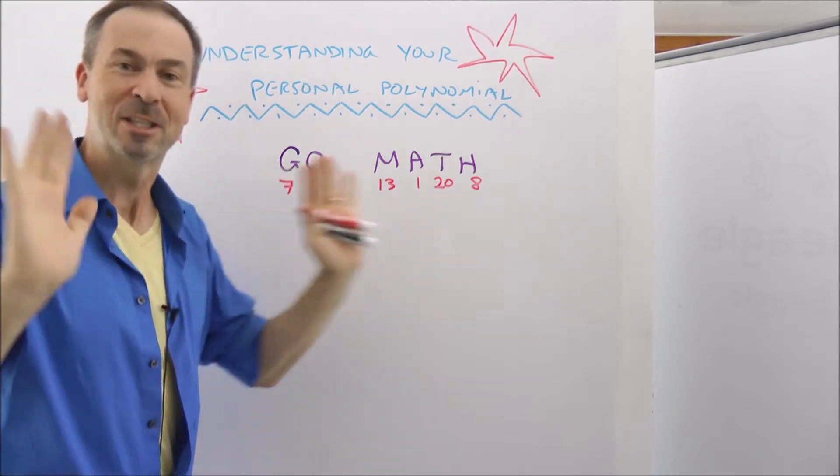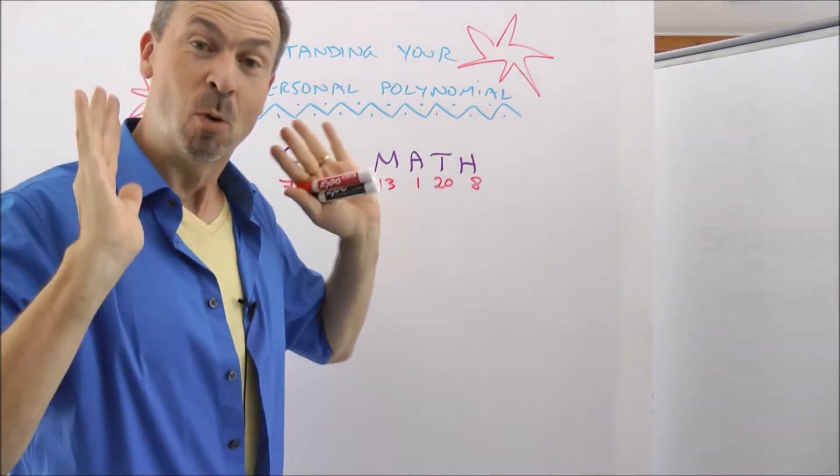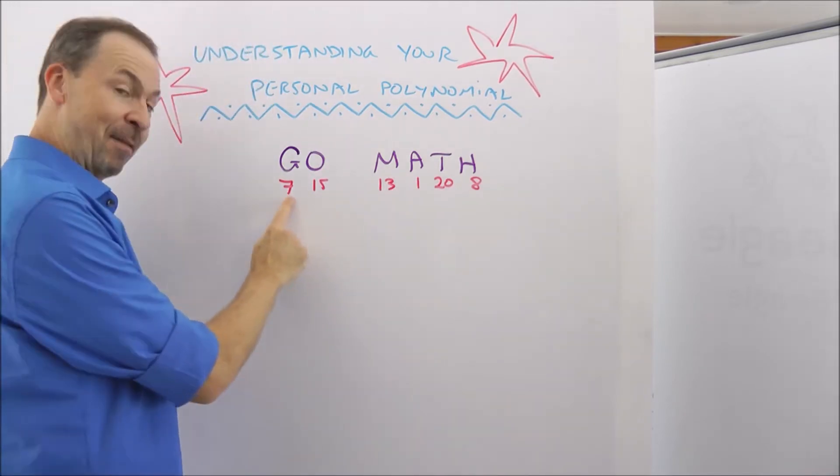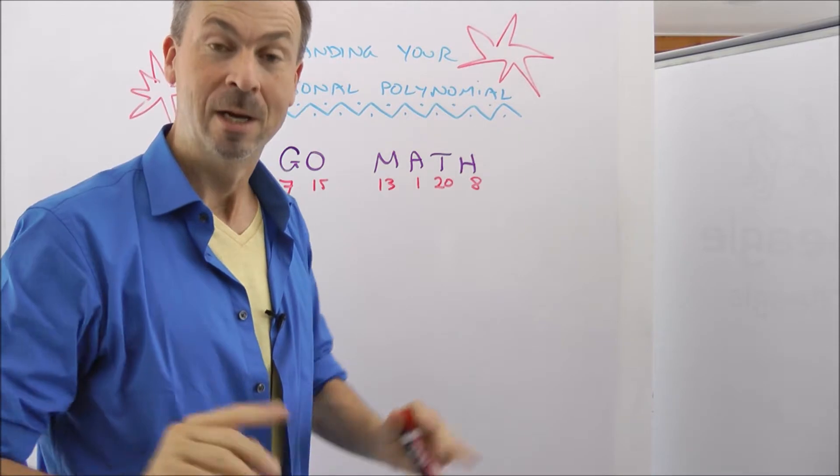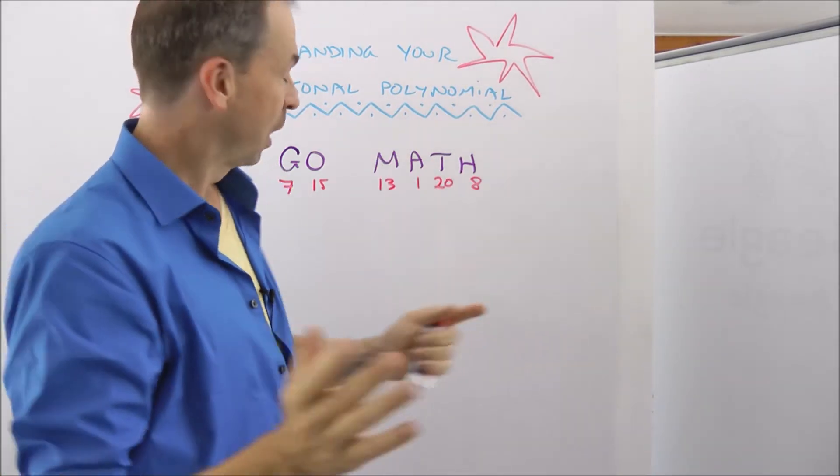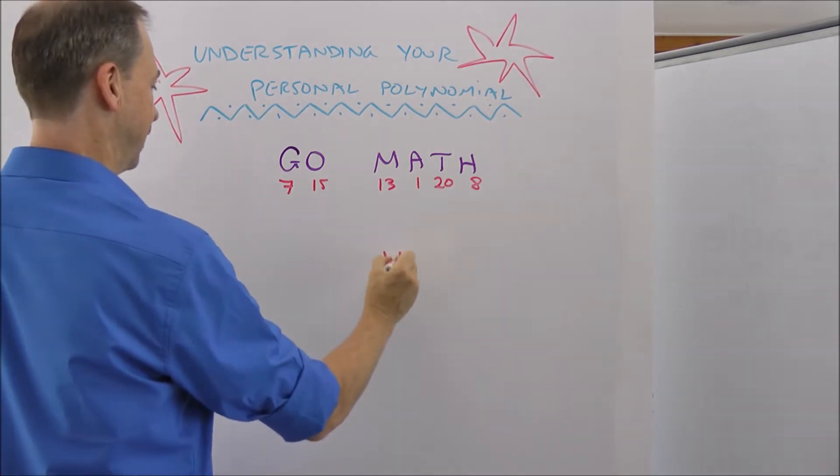Alright, so I'll do the simpler one first. Let's do GO, just two letters. G, the seventh letter of the alphabet, O, the fifteenth. So I want some formula that gives me 7 when I put in x equals 1 and gives me 15 when I put in x equals 2. So how can I create such a formula? Well, I'll do two pieces, one for the 7, one for the 15. So let me start by just writing down a 7 and a 15 piece.